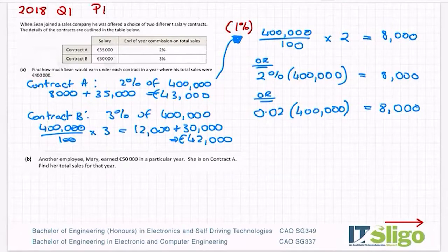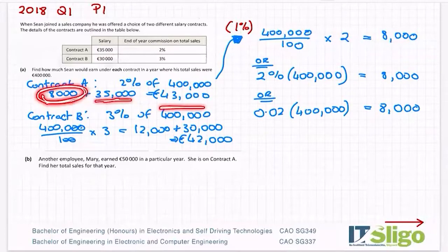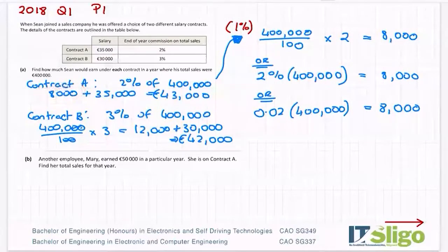Part B then was much more difficult and was worth five marks. Another employee, Mary, earned 50,000 in a particular year. She's on contract A. So find her total sales for the year. Her wages is 50,000. We know that her sales then is going to be bigger than the 400,000 because her wages are bigger. The 35,000 is set. So the only way she can get up to 50,000 in a year is to have 15,000 of commission because 15 and 35 will give you 50. So it's this 15,000 then that I'm going to play around with.